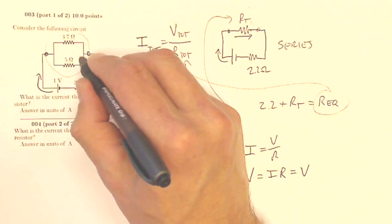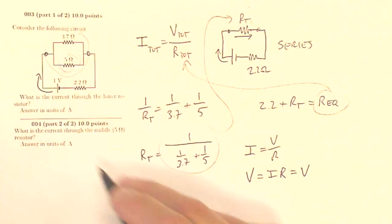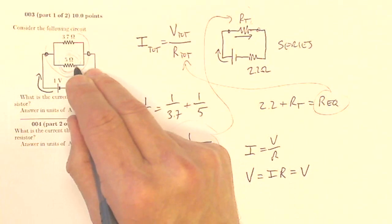So once again, we can apply Ohm's law, because I need the current through this resistor. Now I know the voltage across that resistor, it's the same as this, which is the same as this.